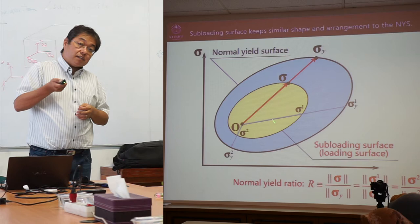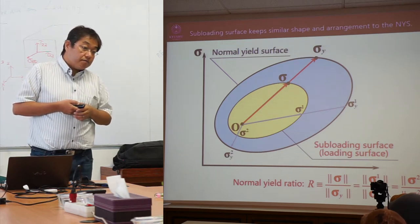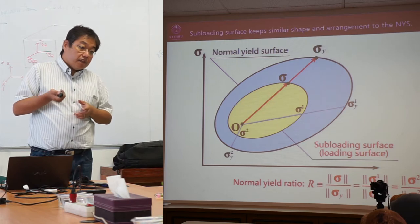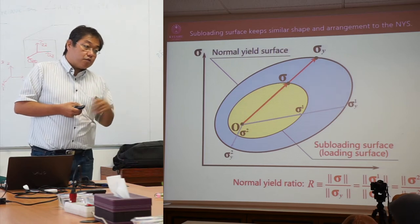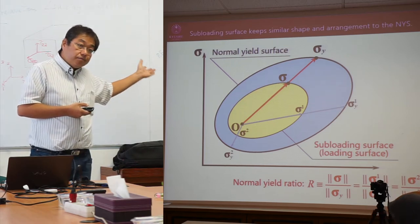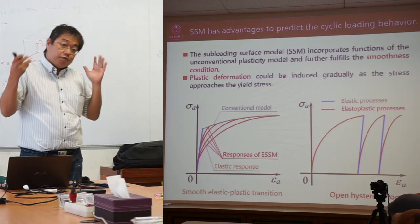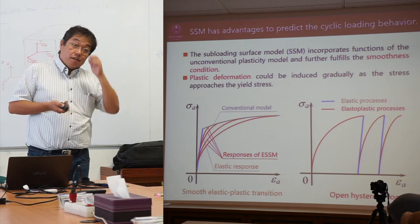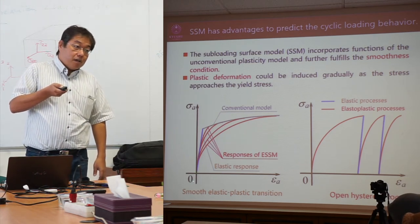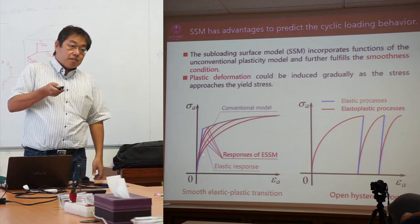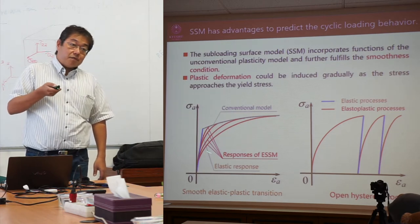The definition of the two surfaces is as follows: when r equals 1, this is what we call the normal yield surface, and the model goes back to the original one — the previous conventional model. Using this model, at a given stress point, we first have elastic deformation. After the inner surface expands, plastic deformation gradually occurs. We can describe this kind of smooth transition.